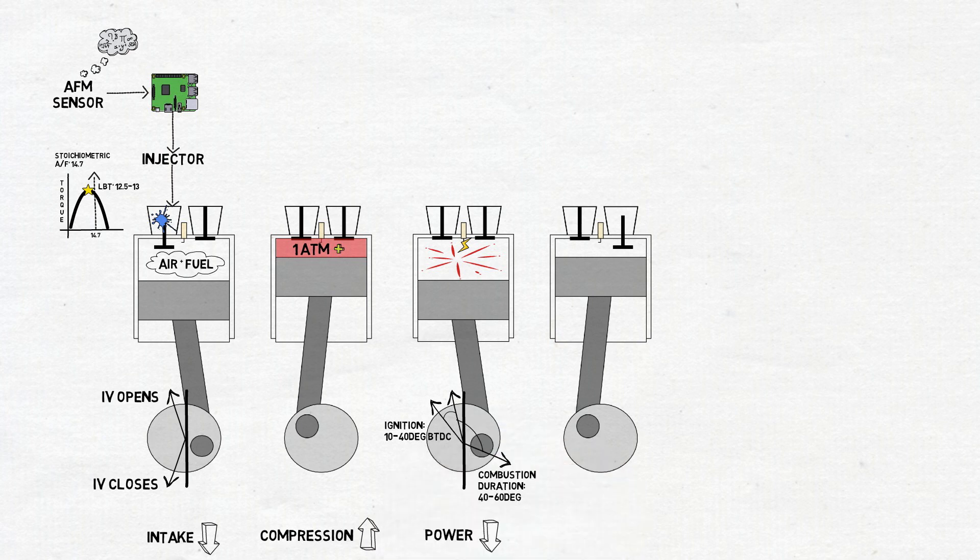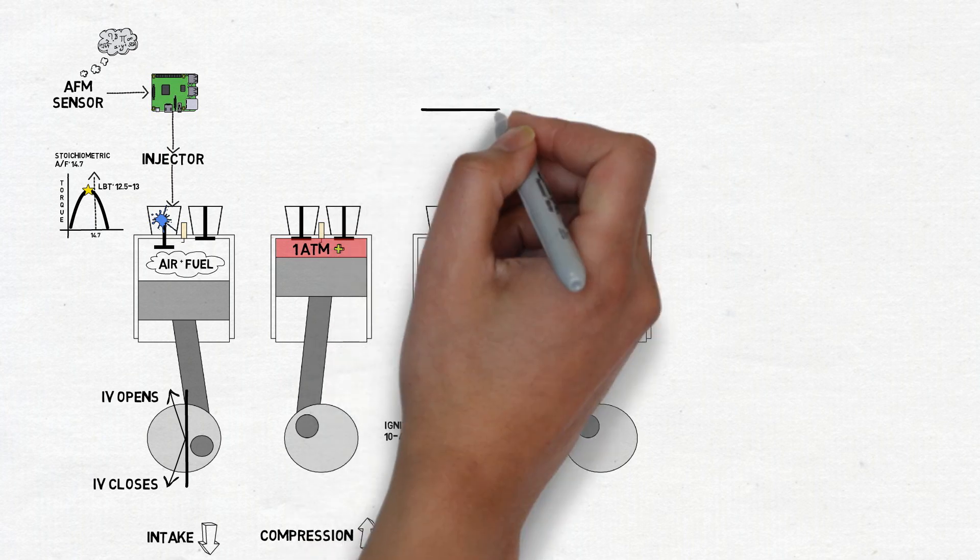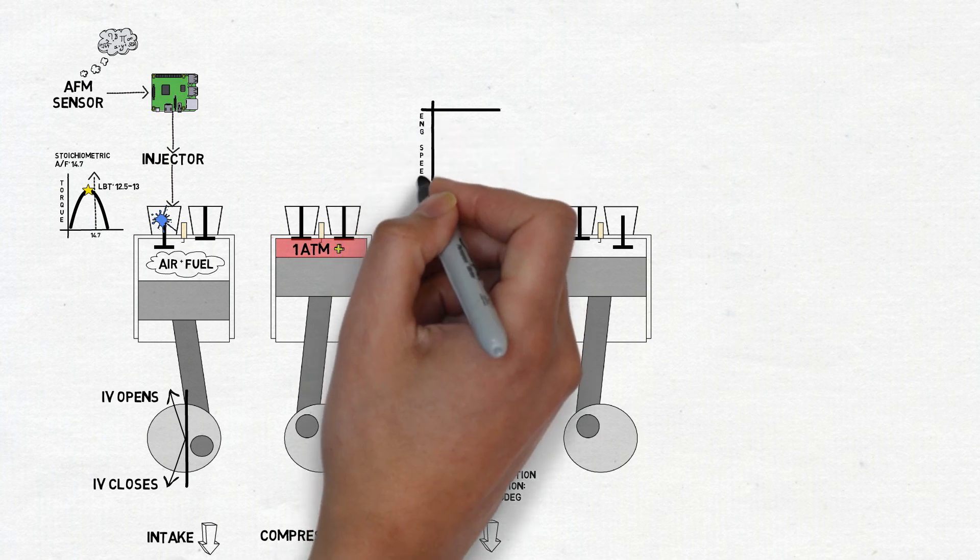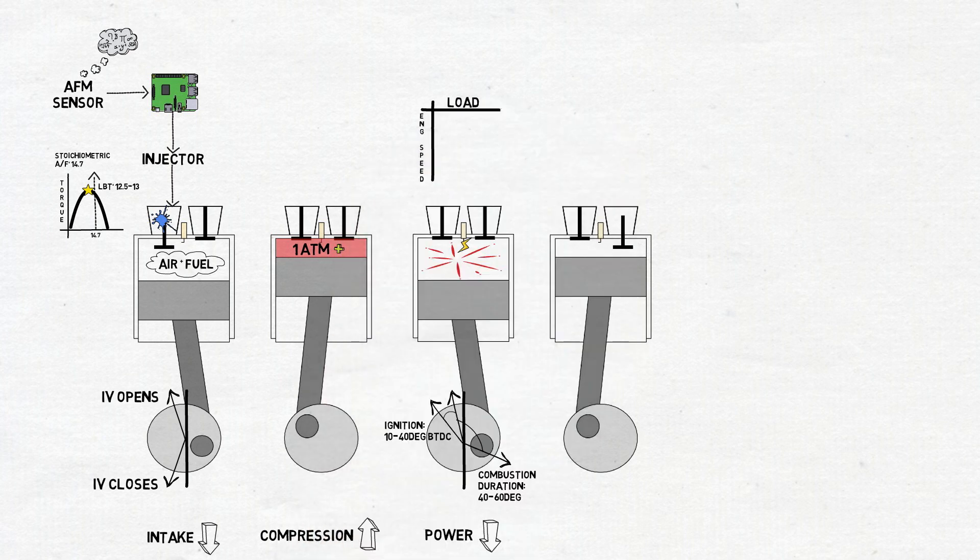At that point, the cylinder pressure increases above the compression stroke level. Maps in the ECU determine the exact timing when the mixture is ignited. Maps are tables with variables such as engine speed and load in the X and Y axis. Their role is to instruct the engine what to do under those specific conditions.